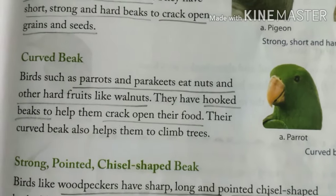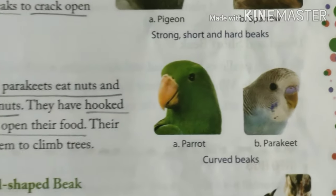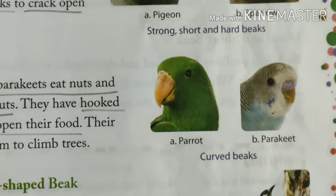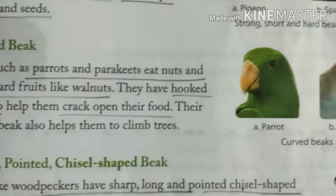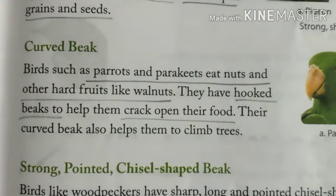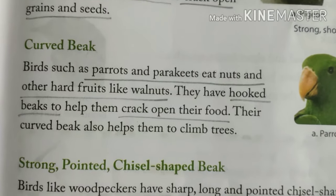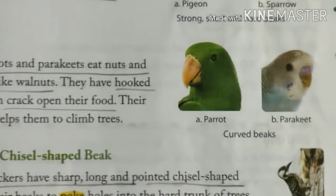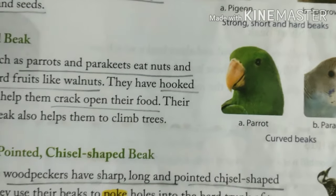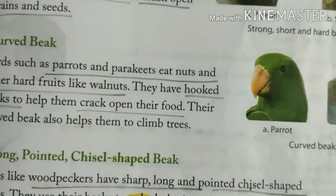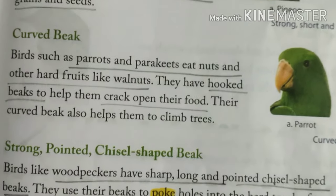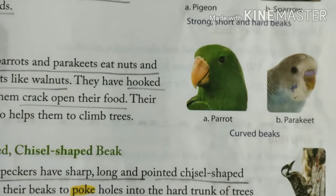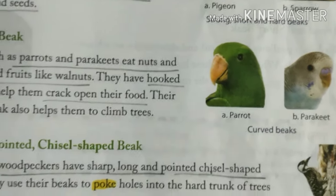Next we have the curved beak. Birds like parrot and parakeet have a curved-shaped beak. This kind of beak helps them to eat nuts and other hard fruits like walnuts. The curved beak helps these birds to crack very hard fruits and it also helps them to climb trees.